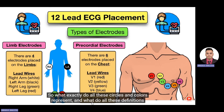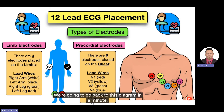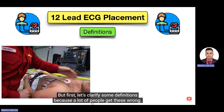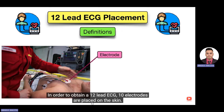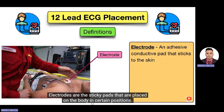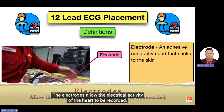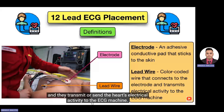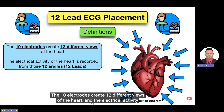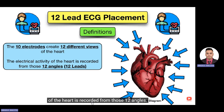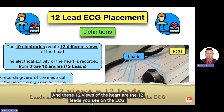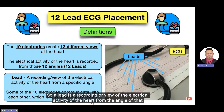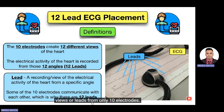Let's clarify key definitions. Electrodes are the sticky pads placed on the body in specific positions, allowing the electrical activity of the heart to be recorded. Lead wires are wires connected to the electrodes that transmit the heart's electrical activity to the ECG machine — they are typically color-coded and must go in the correct position. The 10 electrodes create 12 different views of the heart; these 12 views are the 12 leads you see on the ECG. A lead is a recording of electrical activity from the angle of a particular electrode. Some electrodes communicate with each other, which is why 10 electrodes produce 12 leads.